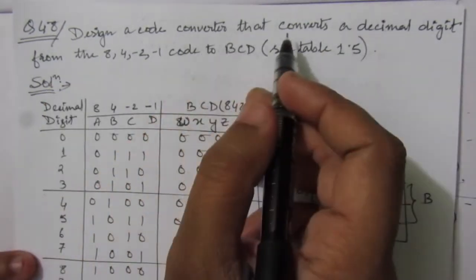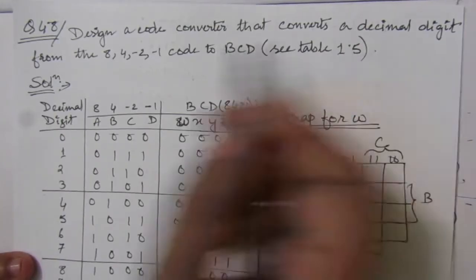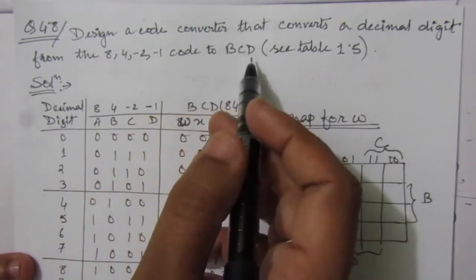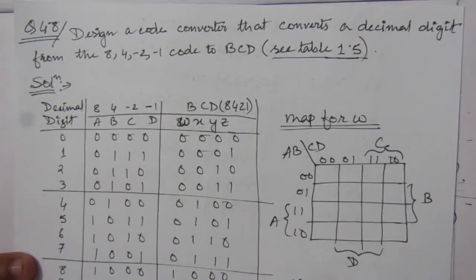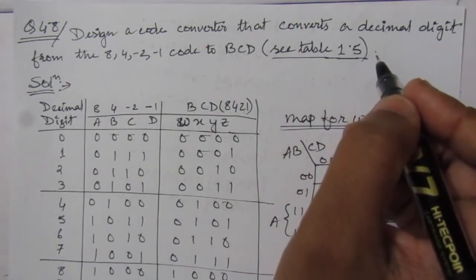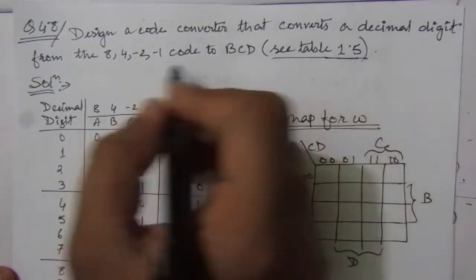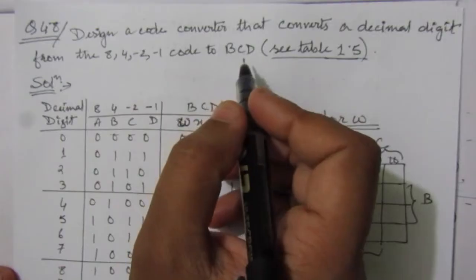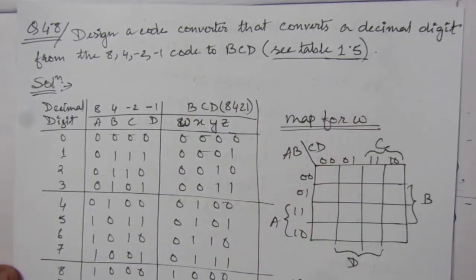The problem is: design a code converter that converts a decimal digit from the 8,4,-2,-1 code to BCD. Inside chapter 1 we will find the conversion table 1.5, and from that we have to design an 8,4,-2,-1 code to BCD code converter. This converter will convert the decimal digits 0 to 9 from 8,4,-2,-1 code to BCD code.